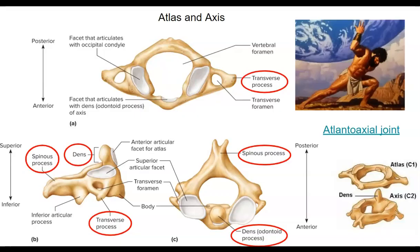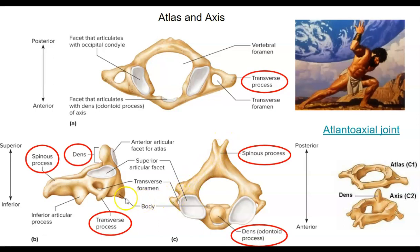Fortunately, the atlas and axis are easy to identify. The atlas is the only vertebra that does not have a vertebral body. And the axis is the only one that has the dens — this process that sticks out. It still has the spinous process and the transverse processes as well.